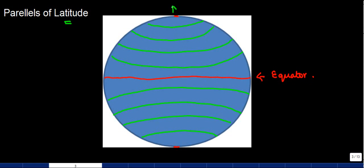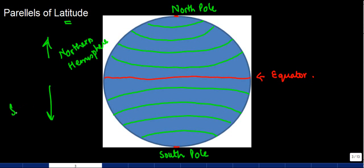We know this is the North Pole, the one on the top, and this is the South Pole. And we also know that the part above the equator is the Northern Hemisphere, and the one below is known as the Southern Hemisphere.